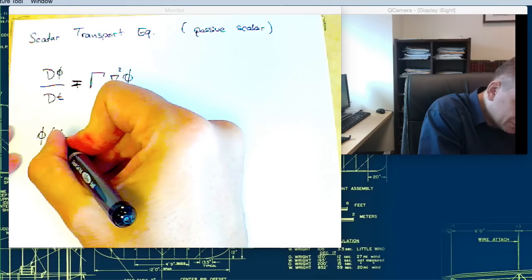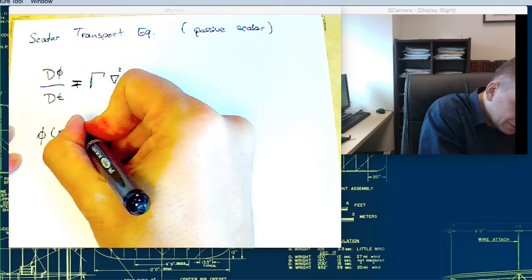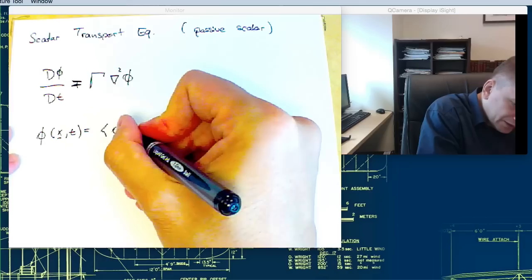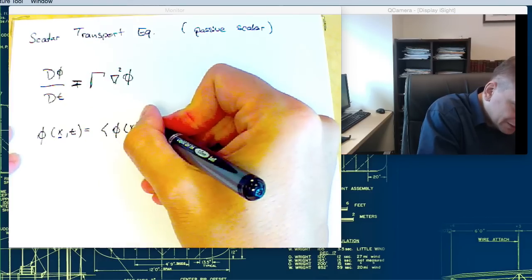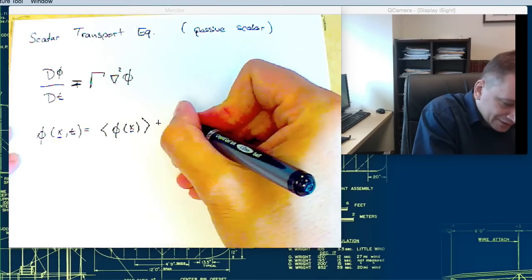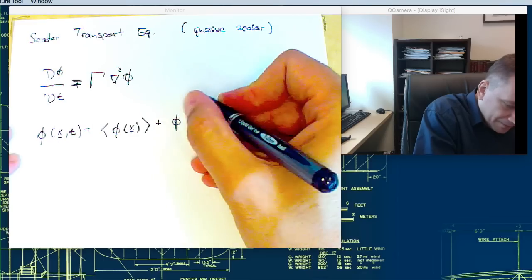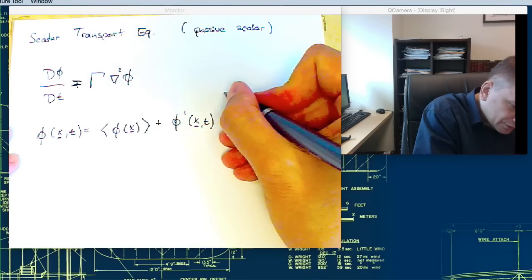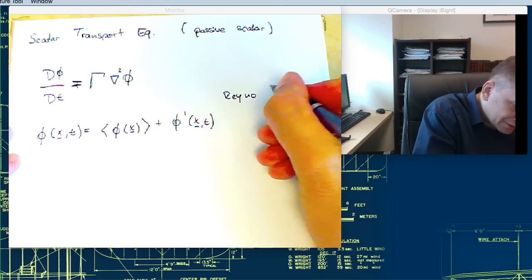The scalar itself is a function of x and t. That is the mean value φ is a function of x, plus φ' is a function of x and t. That's the Reynolds decomposition for the scalar.